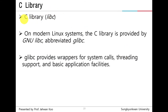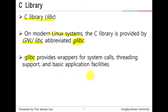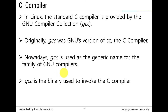C library — libc — is for Unix applications. On modern Linux systems, the C library is provided by GNU libc, known as glibc. Glibc provides wrappers for system calls, threading support, and basic application facilities. If you want to invoke system calls, you just call a system call in the GNU C library.